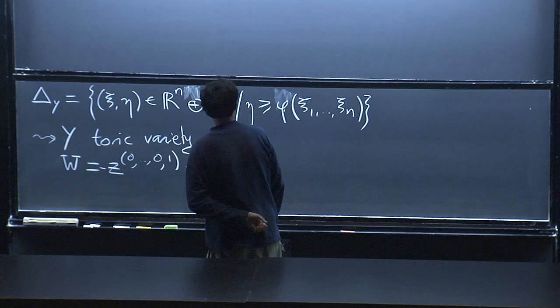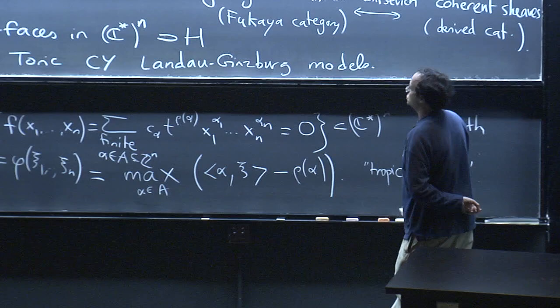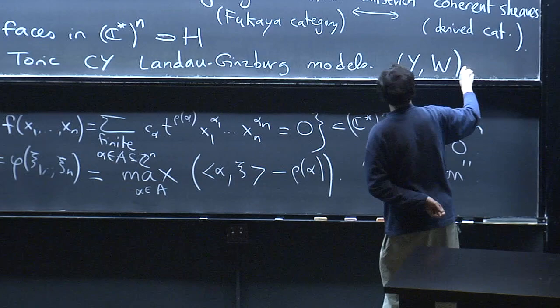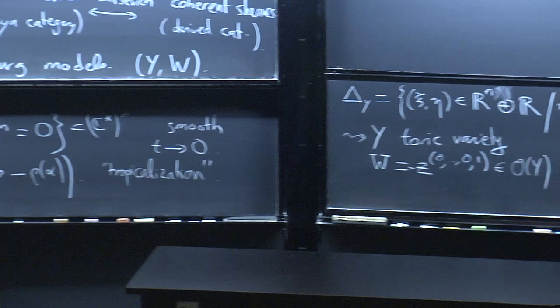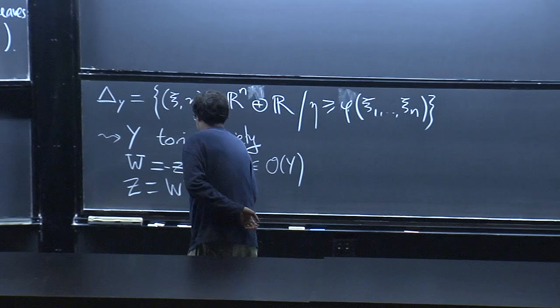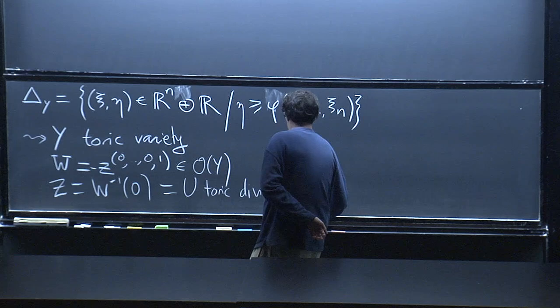The statement is that the mirror space to the hypersurface H is the pair (Y, w), meaning we look at the geometry not just of Y but also of the zero set of w, which we call Z. This Z is the union of all the toric divisors in Y — a singular space obtained as a union of toric varieties.